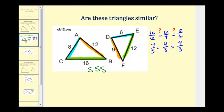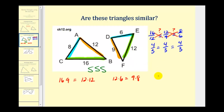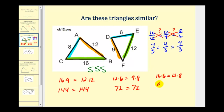If you have difficulty simplifying fractions, you can check cross products instead. Is sixteen times nine equal to twelve times twelve? Is twelve times six equal to nine times eight? And is sixteen times six equal to twelve times eight? One hundred forty-four equals one hundred forty-four, seventy-two equals seventy-two, and ninety-six equals ninety-six. All three cross products are equal, verifying the triangles are similar by side-side-side.